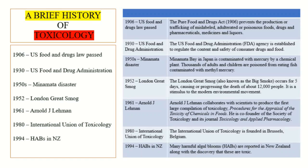In the 1950s, the Minamata disaster occurred in Minamata Bay, Japan. Due to a chemical plant causing mercury poisoning, adults and children who ate contaminated fish from that area died as a result. In 1952, the London Great Smog — a massive smog event — lasted five days in London, causing the deaths of approximately 12,000 people.